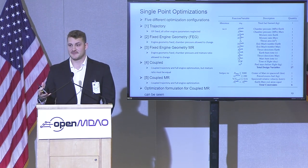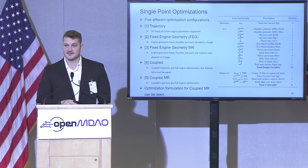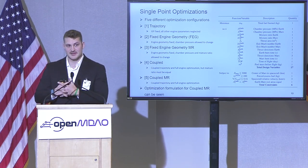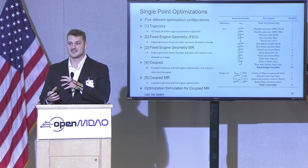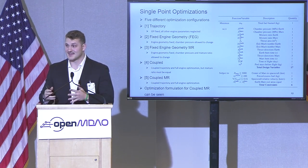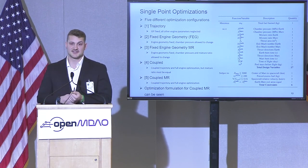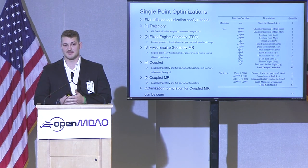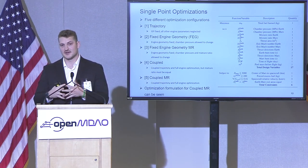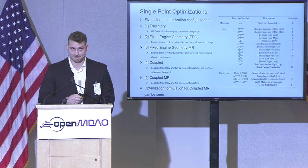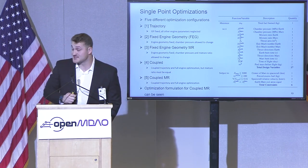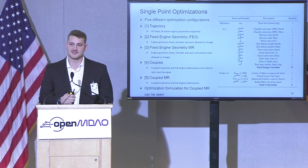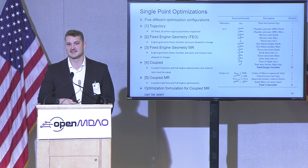For the single point optimizations, five different configurations were run. Starting with trajectory only — here a fixed RL10-428 engine ISP was used in the optimization. Next, fixed engine geometry, where there is some slight coupling but the engine geometry is fixed to the RL engine while the chamber pressure can change. Then fixed engine geometry MR, where the engine geometry is fixed but now both mixture ratio and chamber pressure can change. On to the coupled formulations: here there is full coupling between both disciplines, the engine geometry can change, but the mixture ratios between both burns must be the same. And the most complicated, coupled MR, with full coupling where both engine geometry and mixture ratios between burns can change independently. You can see the optimization formulation for this most complicated case — we're minimizing total fuel burned, with design variables towards the top for the engine and towards the bottom for the trajectory, and constraints being those relative position and velocities as well as the exit area constraint.